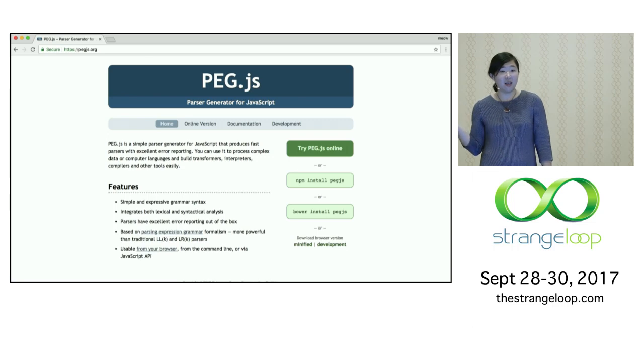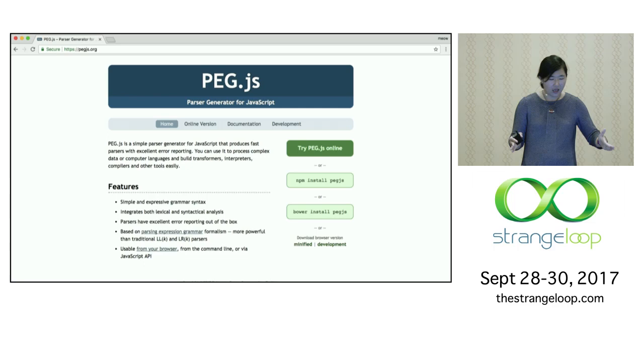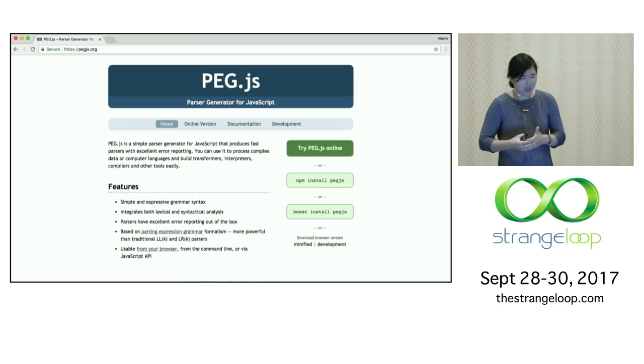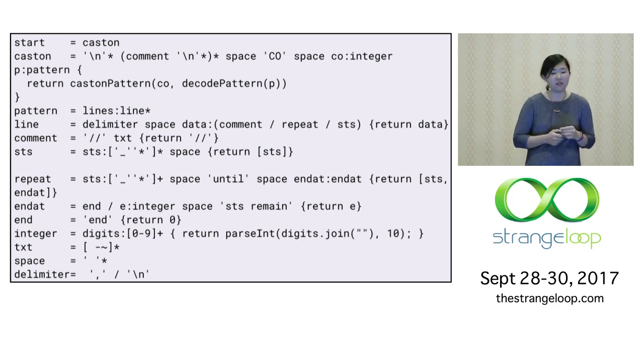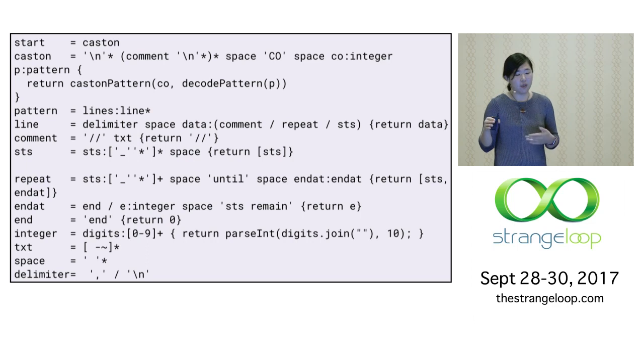So I used peg.js to make this project. Peg.js is a parser generator for JavaScript, which lets you basically generate a parser or the compiler using a thing called parsing expression grammar. And entire code for doing this, the 64 stitches, looks like this with a little bit of JavaScript outside of this page. So it was a little bit of time to learn how to do this expression. But it's kind of amazing that this tiny bit of code can spit out a parser that supports a very small programming language. That was interesting.